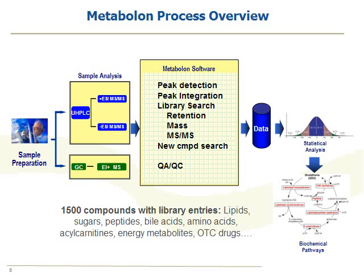Metabolon's approach to streamline this process was first to build our own in-house library, to help streamline the identification process, which can take a great deal of time. Our library currently contains 1,500 compounds, and this is always growing. We're always adding new compounds as we discover new interesting classes or make identifications — any number of different types of molecules, you name it, it's probably in there.